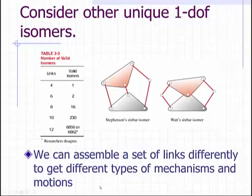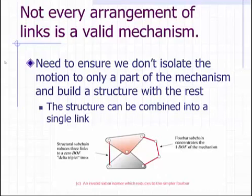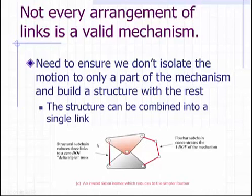We can assemble a set of links differently to create different types of mechanisms and motions. However, not every arrangement of links is a valid mechanism. We need to ensure that when we arrange our links we do not isolate the motion to only part of the mechanism and build a structure with the rest. An example is the arrangement shown here on the left, where rearranging the Watt six-bar by moving one of the binaries from the left side to the right results in a structural sub-chain on the left and a simple four-bar chain on the right. This would not be a valid six-bar isomer.